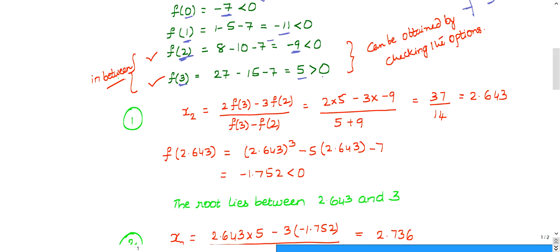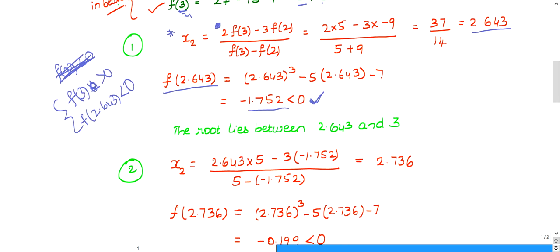Now let us find x2. x2 is nothing but just substitute. This is x0, x0 is 2, x1 is 3. f of 2 is minus 9, f of 3 is 5. So just I substituted in this formula. You substitute and simplify, you will get x2 as 2.643. Then at this x2, find its functional value. You will get it as negative value, less than 0. So the root lies between, for 2 it is less than 0, for 3 it is greater than 0. For f of 2.643 it is less than 0. So the root lies between not 2 and 3, it lies between new root lies between 2.643 to 3.